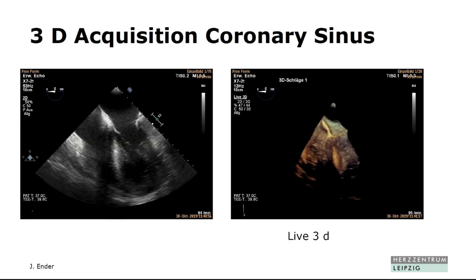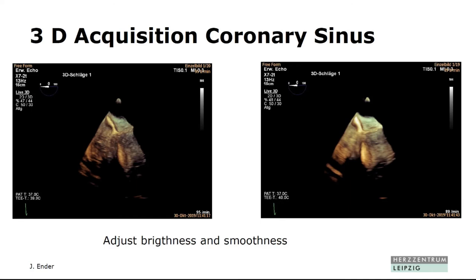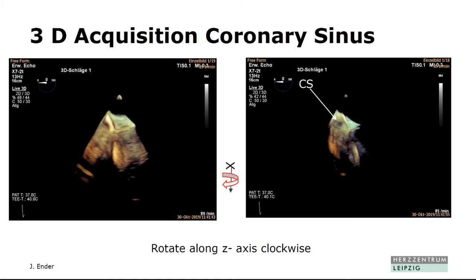Coming to the coronary sinus. You see here the smoothing is not really good — again starting from the four-chamber view, you press live 3D, you have a 2D cutting plane with a little bit more elevation. Then you do the brightness and smoothing. Without smoothing the tissue looks rough; with smoothing the tissue looks smoother — you are reducing the spatial resolution. The coronary sinus should be above the tricuspid valve, so you just rotate along the z-axis and then you see the coronary sinus. These are pictures you don't see in 2D.